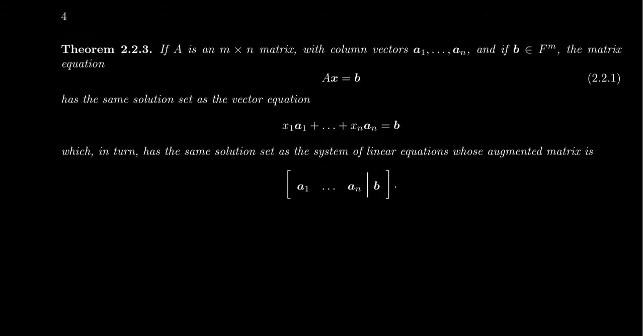In the previous video, we learned how to compute the matrix-vector product. That is, if we have an m by n matrix and we multiply it by a vector from fn, we can get a vector in fm. And so now consider the matrix equation Ax equals b.